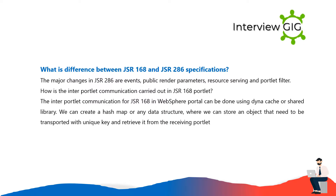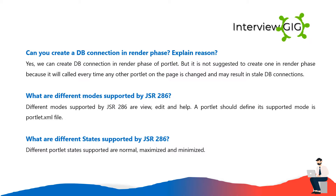The major changes in JSR 286 over JSR 168 are events, public render parameters, resource serving, and portlet filters. For inter-portlet communication in JSR 168 and WebSphere Portal, it can be done using a dynamic hash map or shared library. You create a hash map or data structure, store the object with a unique key, and retrieve it from the receiving portlet.